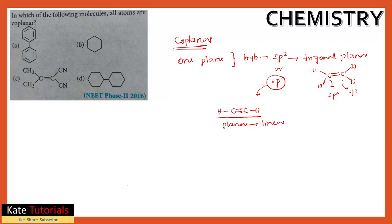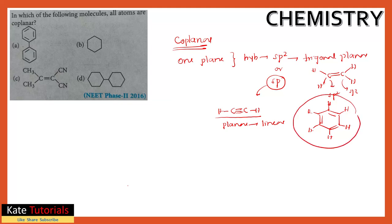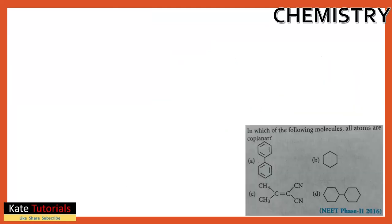Similarly, in the benzene ring — double bond, single bond, double bond alternating — all carbons are sp2 hybridized. So all six hydrogens and six carbons lie in the same plane. This confirms that sp2 hybridization gives coplanarity.